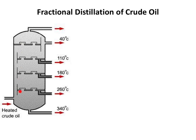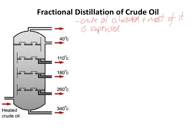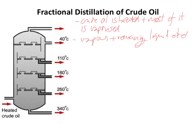This is our industrial fractionating column. It looks very different to one we might use in the lab. The first step is incredibly important - it happens to the crude oil even before it has reached the column. The crude oil is heated and most of it is vaporised. The vapours and the remaining liquid then enter the column. The column is heated at the bottom, which means the bottom is hot and the top is much cooler.